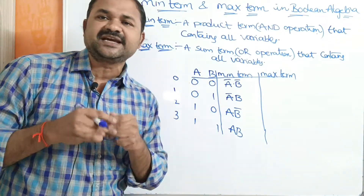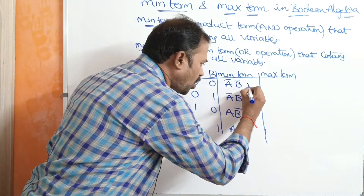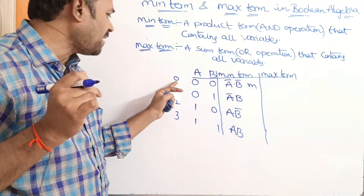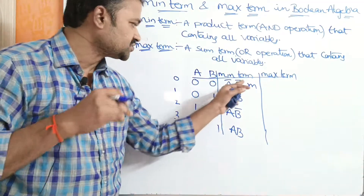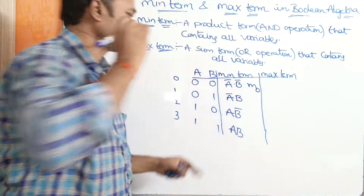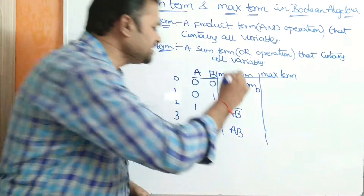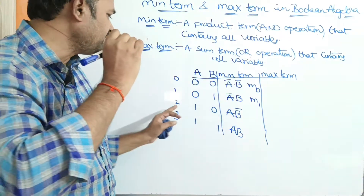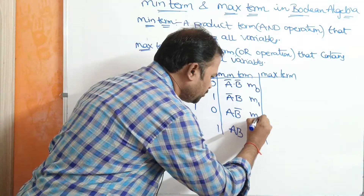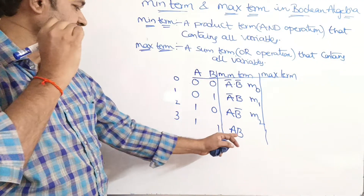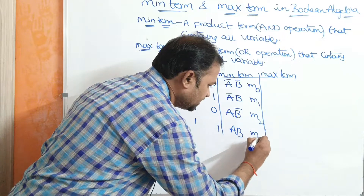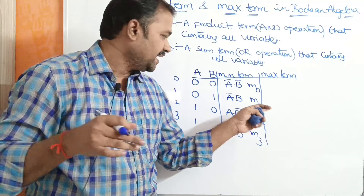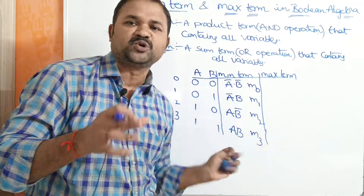In order to represent a minterm, we use small m. In the suffix, we write the decimal number. So A̅B̅ is m0, A̅B is m1, AB̅ is m2, and AB is m3. Small m represents the minterm, and 0, 1, 2, 3 are the positions.